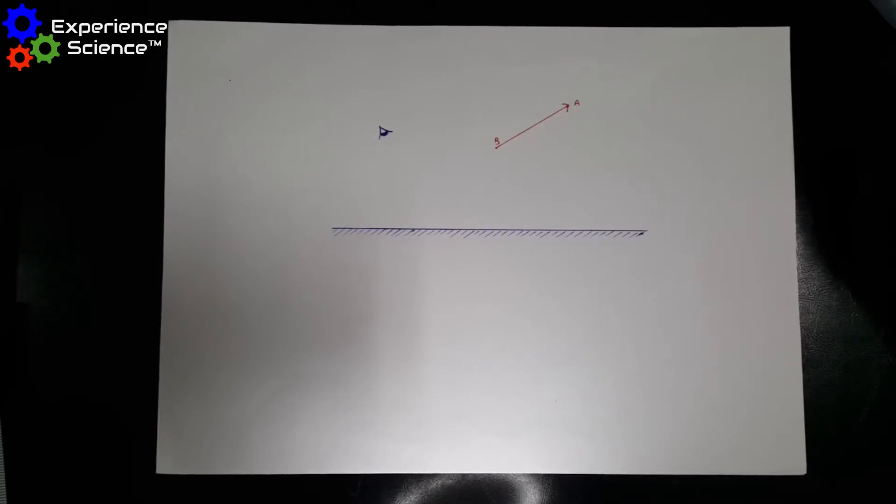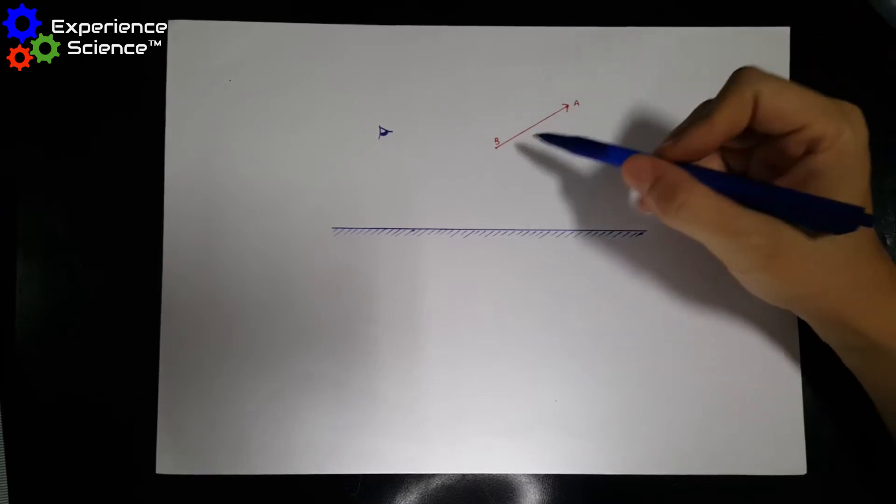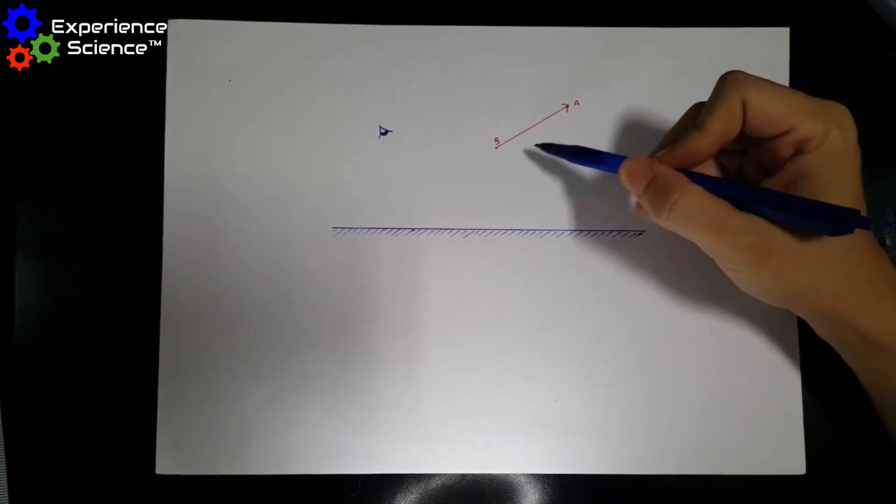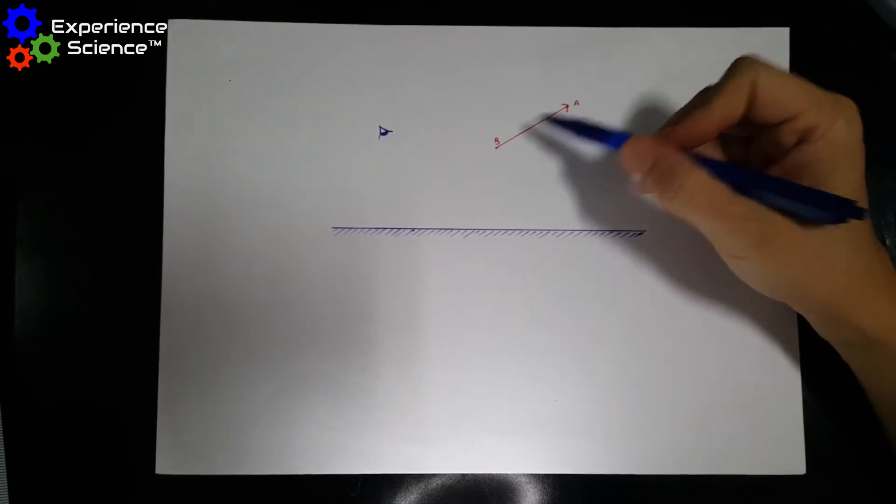This is how we draw a ray diagram to show how a reflection appears in the mirror. This is our object, which is a red arrow drawn from A to B.